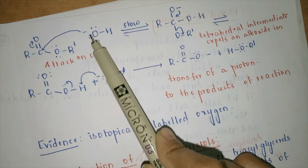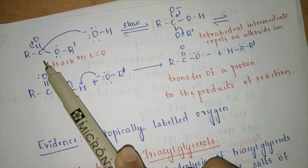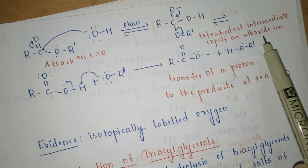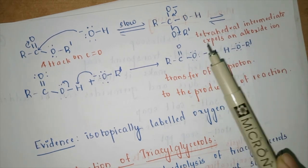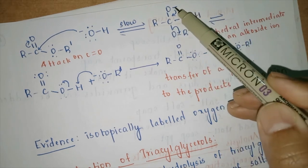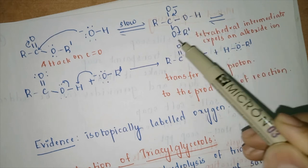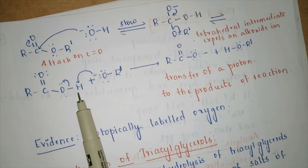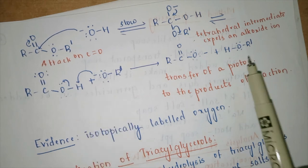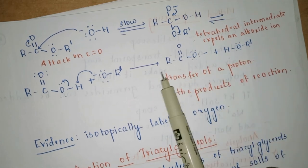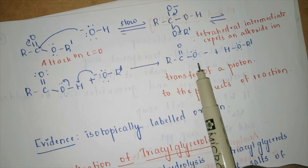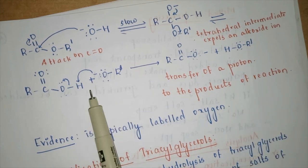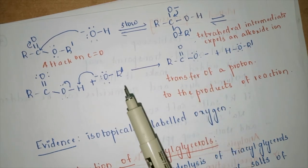In the mechanism: a nucleophile (base) attacks the carbonyl carbon of the ester R–CO–OR' — this is a slow, rate-determining step. A tetrahedral intermediate forms, then the lone pair of electrons travels back to regenerate the carbonyl carbon, expelling an alkoxide ion RO⁻. This alkoxide ion abstracts a proton to give an alcohol, while a carboxylate anion is formed.